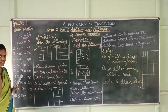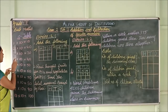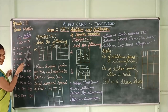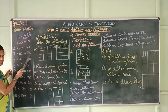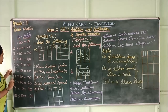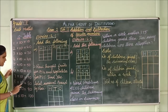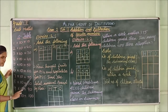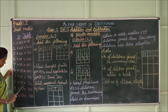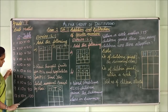See, the 10 table is very simple, right? Shall we recall once again, children? One 10 is 10. Two 10s are 20. Three 10s are 30. Four 10s are 40. Five 10s are 50. Six 10s are 60. Seven 10s are 70. Eight 10s are 80. Nine 10s are 90. Ten 10s are 100.